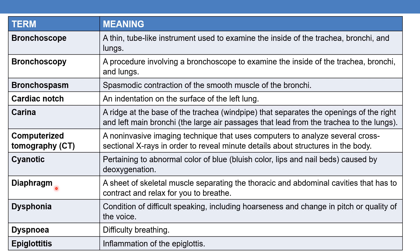The next is diaphragm. It is a sheet of skeletal muscle that separates the thoracic and abdominal cavities. Diaphragm separates the thoracic and abdominal cavities and it has to contract and relax for you to breathe — it plays an important role in breathing. The next is dysphonia, a condition of difficult speaking including hoarseness and change in pitch or quality of the voice.